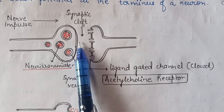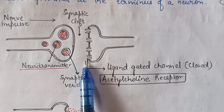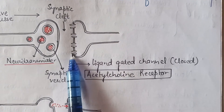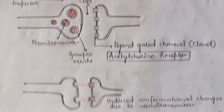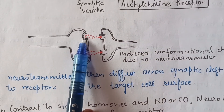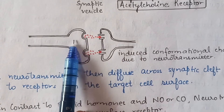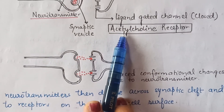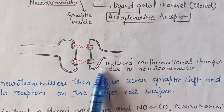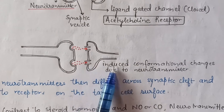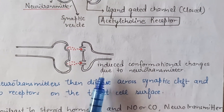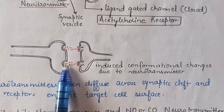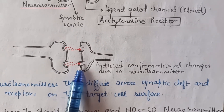When the synaptic vesicles undergo exocytosis from their membrane, the neurotransmitters are released into the synaptic cleft. These ligands bind to receptors present on the other neuron, which are specific receptors that receive the signals. For example, it could be an acetylcholine receptor. As the ligand binds to the receptor, certain conformational changes are induced in the receptor due to the neurotransmitter binding.